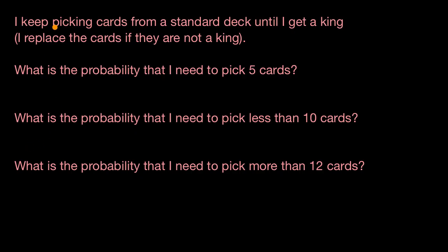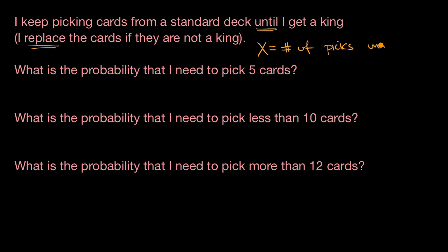So here we have a scenario. I keep picking cards from a standard deck until I get a king. This is a classic geometric random variable, and it's important that in parentheses it says I replace the cards if they are not a king. And this is important because the probability of success each time can't change. So we define random variable x as the number of picks until we get a king, when we replace the cards if they are not a king.